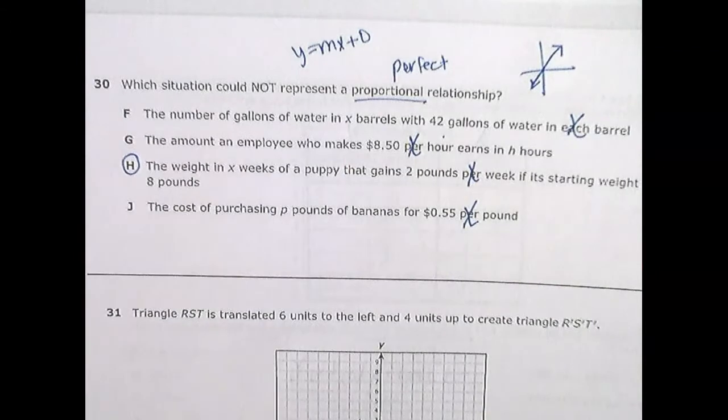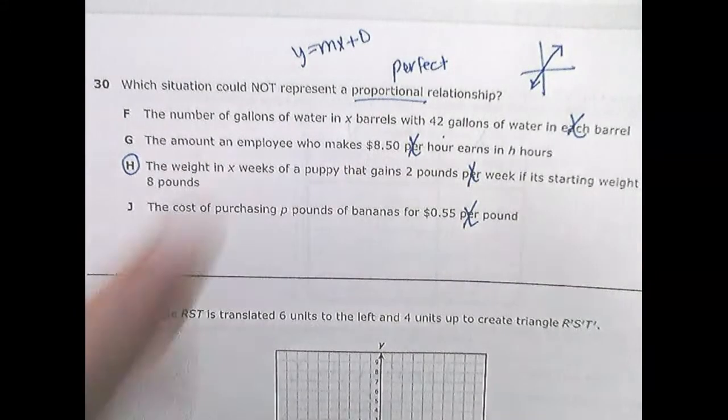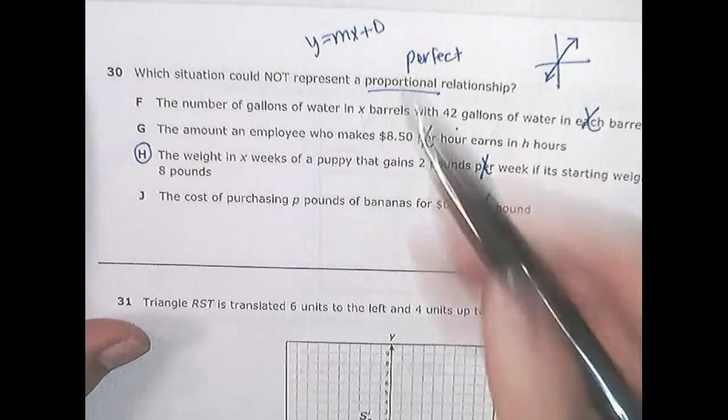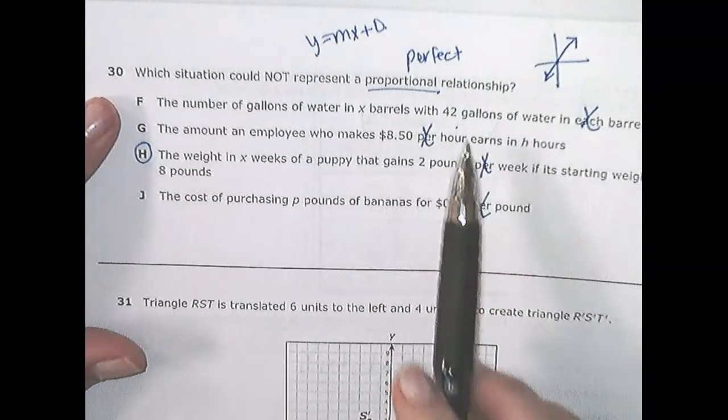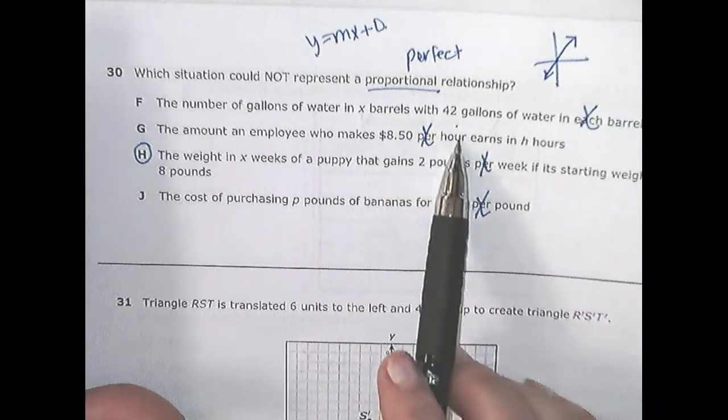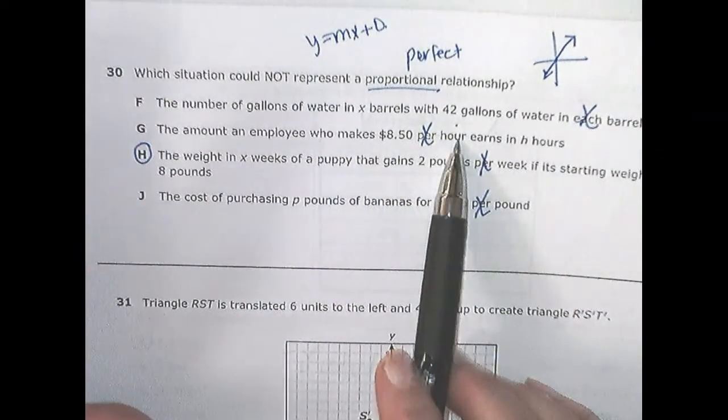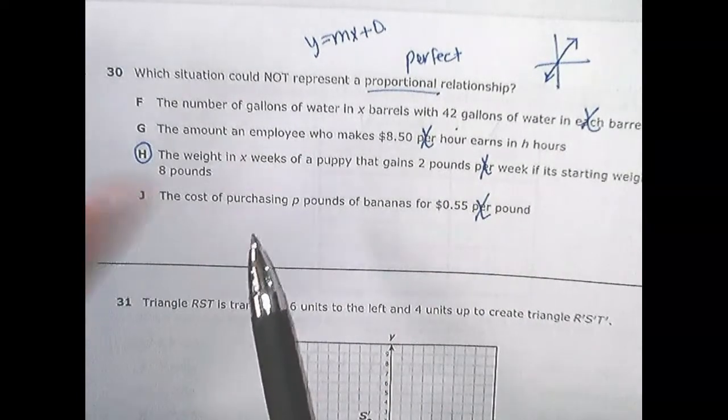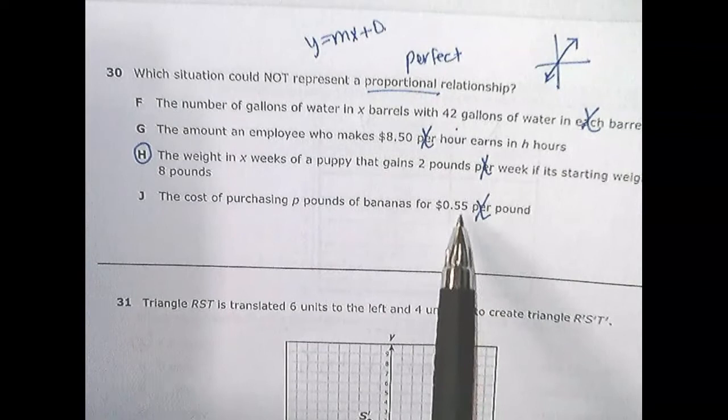The weight in a puppy that gains 2 pounds per week, if it's starting weight is 8 pounds. And then the last one, the cost of purchasing pounds of bananas at blank per pound. Of those four, one's different because it's the one that does not work.